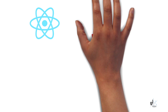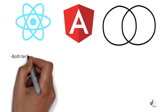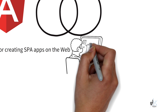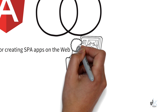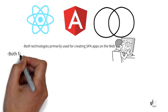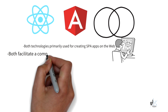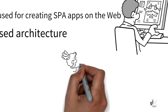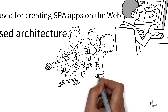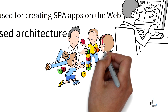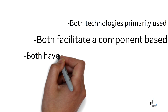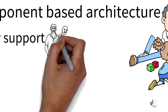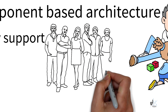Similarities between React and Angular: Both technologies are open source and primarily used for the creation of high-performing UI user interactive functionality for single-page applications on the web, where the UI is split up into smaller, loosely coupled components. Both Angular and React facilitate a component-based architecture, which makes it easier to build and maintain complex UIs and provides the ability to reuse components across the application. Both technologies have large ecosystems that support a wide range of third-party libraries, and both are maintained by large tech companies with huge community support.